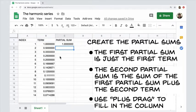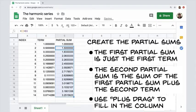We're going to say equals previous partial sum plus current term. So that's going to pick off the previous partial sum and the current term. And now if we use plus drag, we will successfully drag down that reference and we get our partial sums.